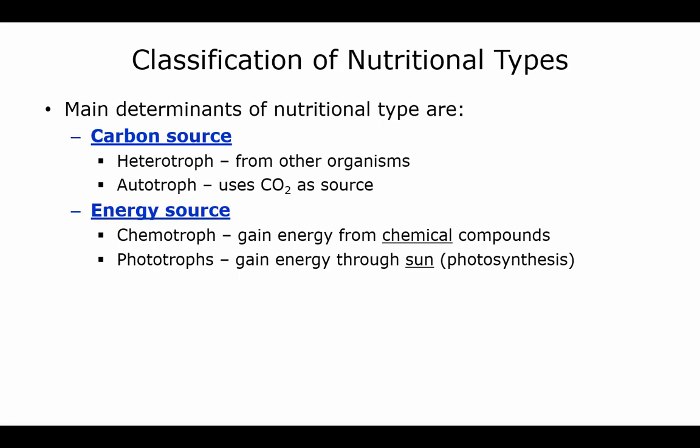Objective number three asks about the nutritional types. The main determinant of the nutritional type is where they get the carbon from. Heterotrophs get it from other organisms. Autotrophs are using carbon dioxide as their source of carbon. Chemotrophs gain energy from chemical compounds and phototrophs get it from the sun through photosynthesis.